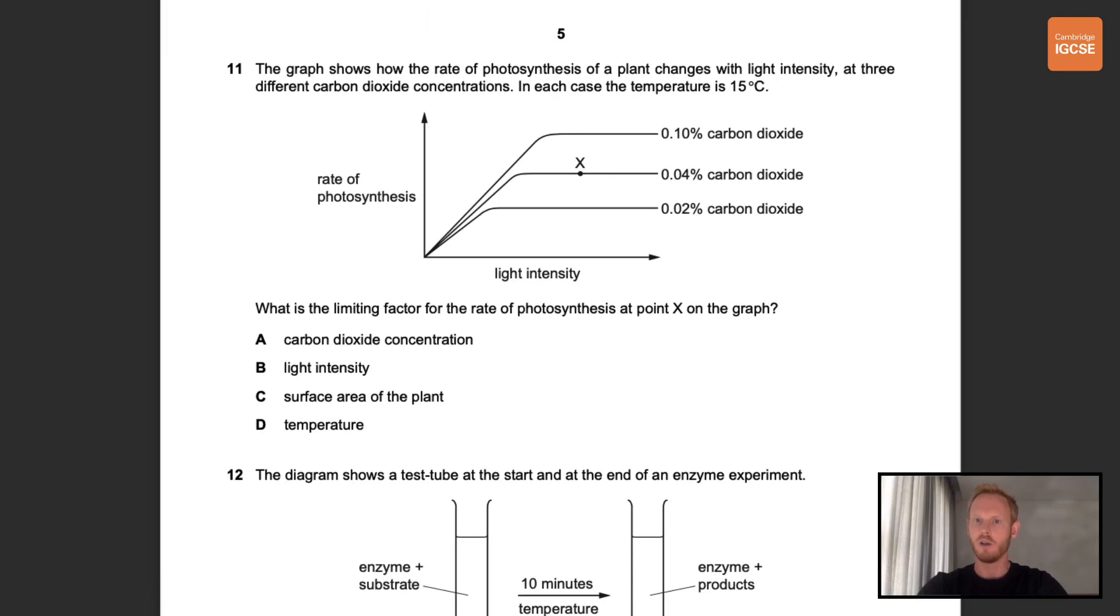Number 11. The graph shows how the rate of photosynthesis of a plant changes with light intensity at three different carbon dioxide concentrations. In each case the temperature is 15 degrees Celsius. What is the limiting factor for the rate of photosynthesis at point X on the graph? So the correct answer here is A, carbon dioxide concentration. We know this because the greater the carbon dioxide concentration, the faster the rate of photosynthesis.